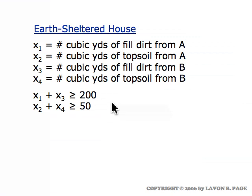One of the constraints said that they need at least 200 cubic yards of fill dirt. Well, the total amount of fill dirt they get will be X1 plus X3. So the amount of fill dirt purchased has to be greater than or equal to 200 cubic yards. Another constraint said that they need at least 50 cubic yards of topsoil. The total amount of topsoil they procure will be X2 plus X4. So that total has to be greater than or equal to 50 yards. So that's two of our constraints.